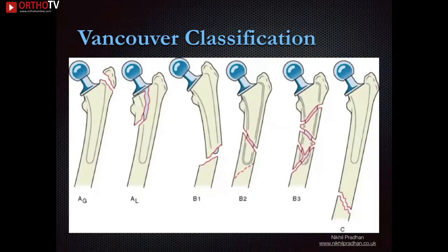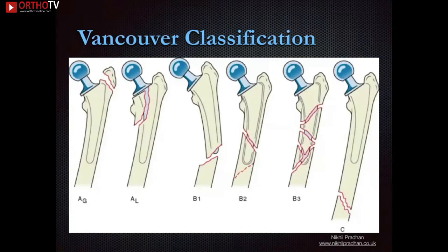The most commonly used classification is the Vancouver classification. Type A involves the greater or lesser trochanter, with subtypes based on displacement less than or greater than one centimetre. Type B1 has a well-fixed stem, B2 a loose stem, and B3 poor bone stock. Type C is where the fracture is distal to the stem or cement-implant composite.